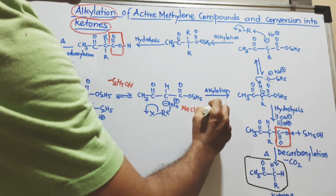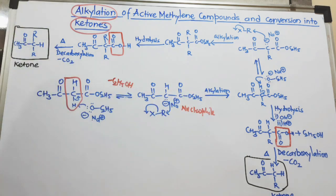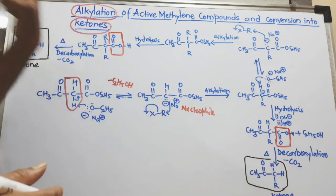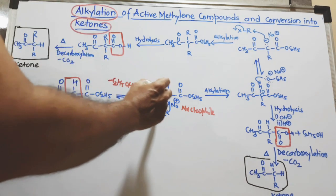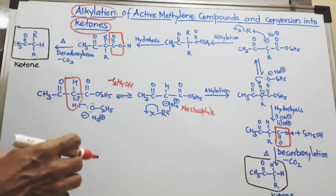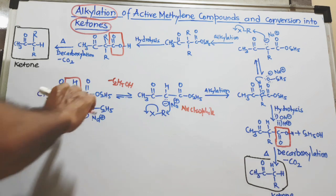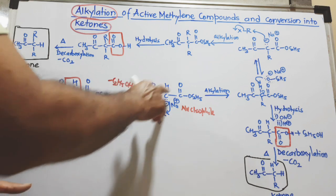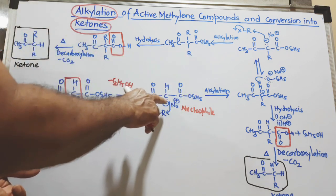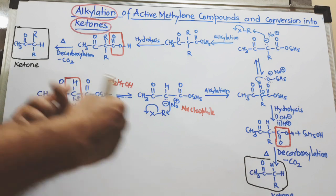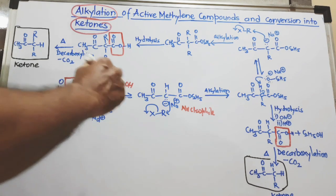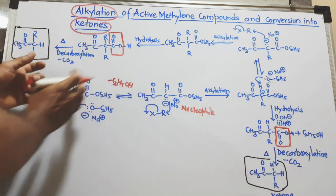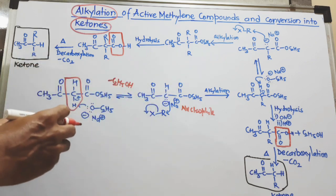This carbanion is produced because of the negative charge and extra pair of electrons. There are two driving forces: the acidity of this proton due to two electron-withdrawing groups, and resonance. This newly generated carbanion is stabilized by resonance, which is why we can convert this compound into a carbanion more easily.